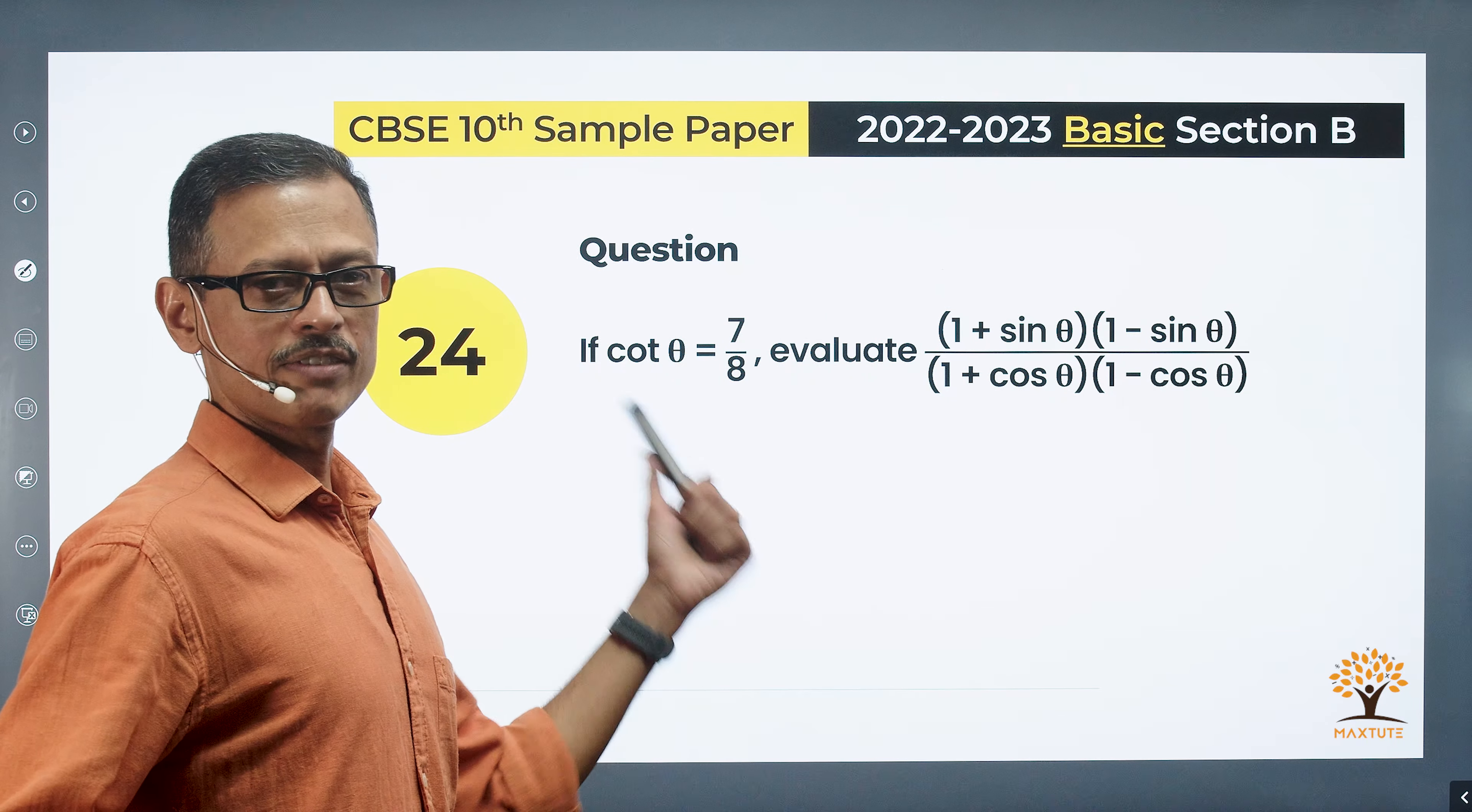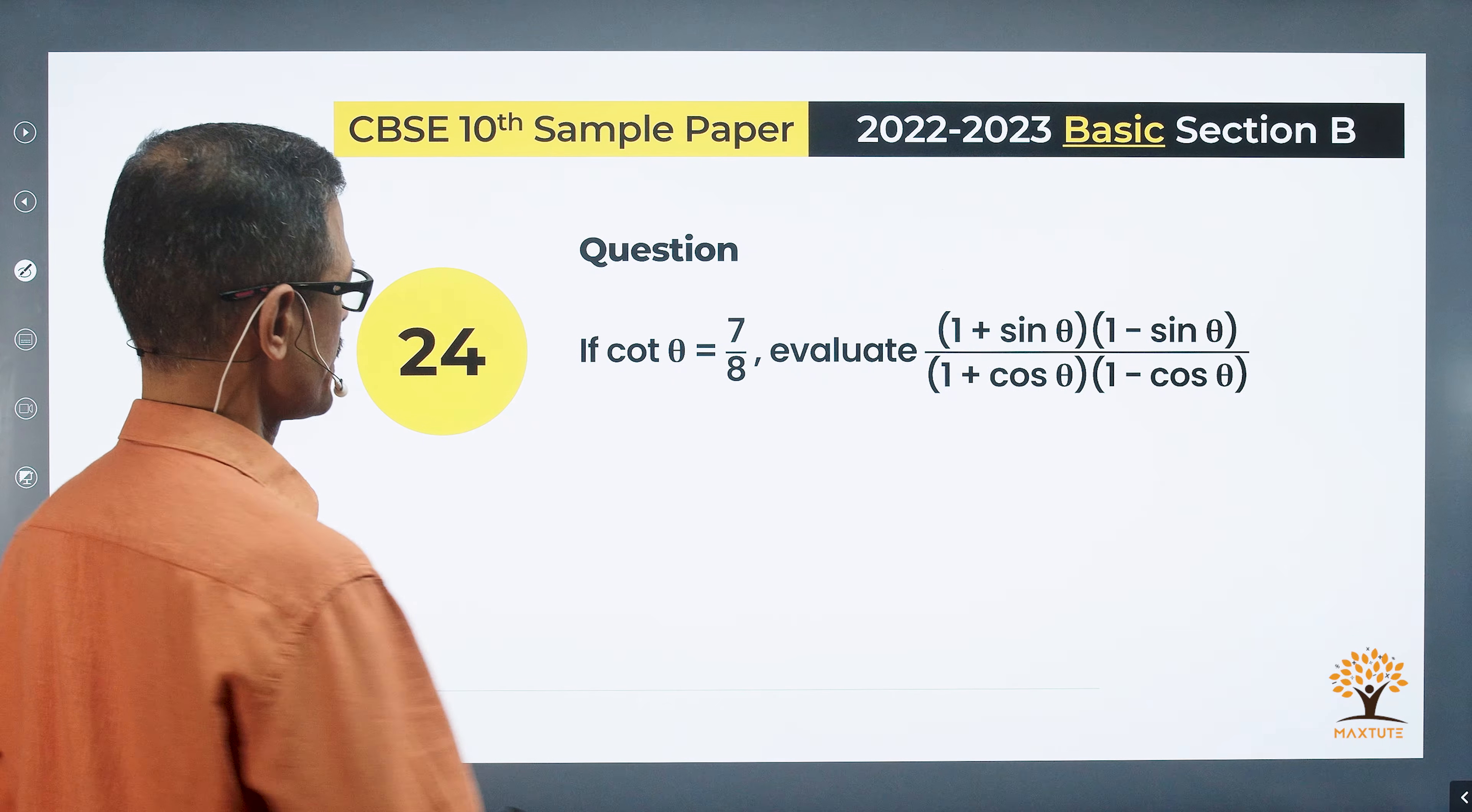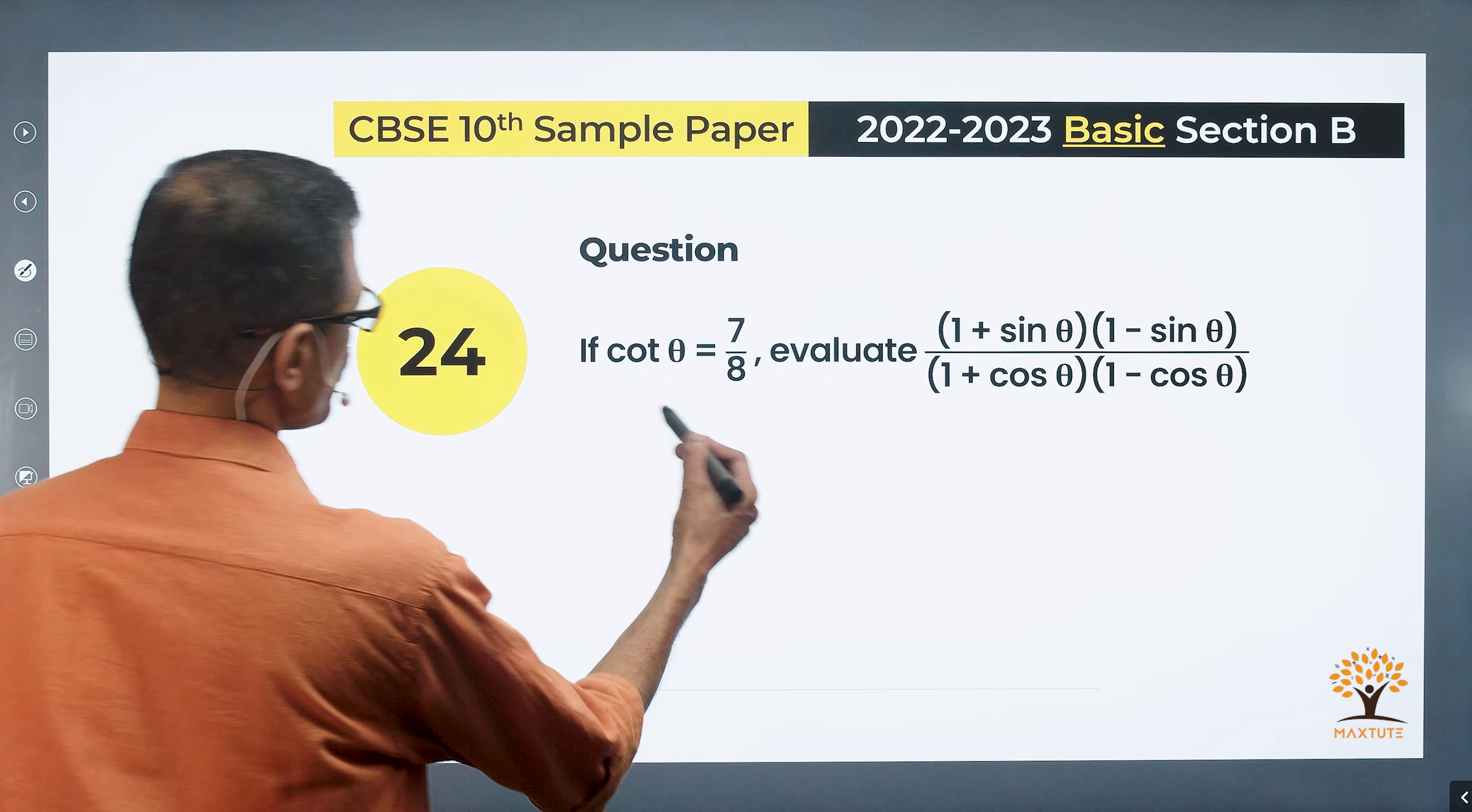Question 24. It's a very easy question. Trigonometric identities is what is tested in this question. Cot theta is equal to 7 by 8. Evaluate this expression is what we have.